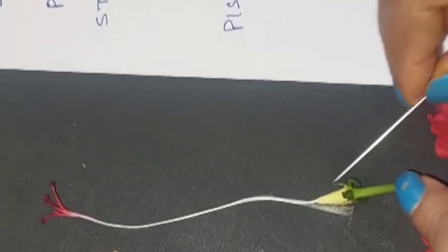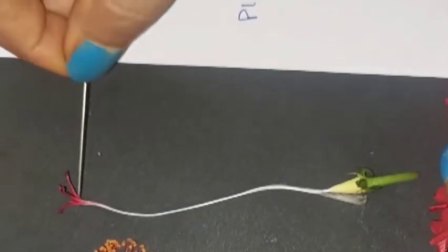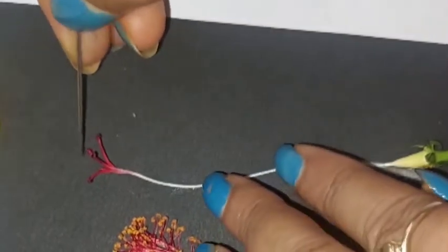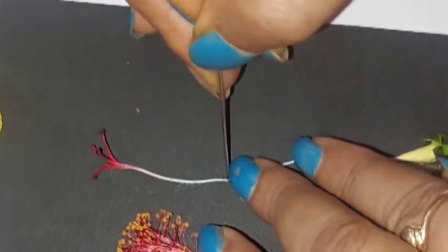This is the female part of the flower. We call it pistil or carpel. This is the receptor of pollen grains. Pollen grains germinate when they fall on the stigma of a flower of the same species.